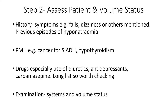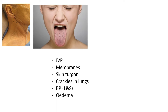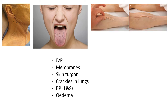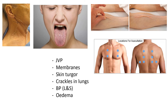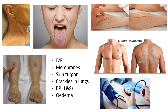Moving on to examination and the all-important volume status assessment. Check the JVP with the patient lying at 45 degrees — can you see that pulse risen above normal? Check mucous membranes: look inside the mouth at the lips and tongue; do they look dry or well-hydrated? Similarly, assess skin turgor — pinch the skin and see whether it looks dehydrated, whether a mark remains after you remove your hand. Listen to the chest for crackles. Check lying and standing blood pressure to exclude a postural drop. And look for edema in the legs and abdomen, including for ascites.